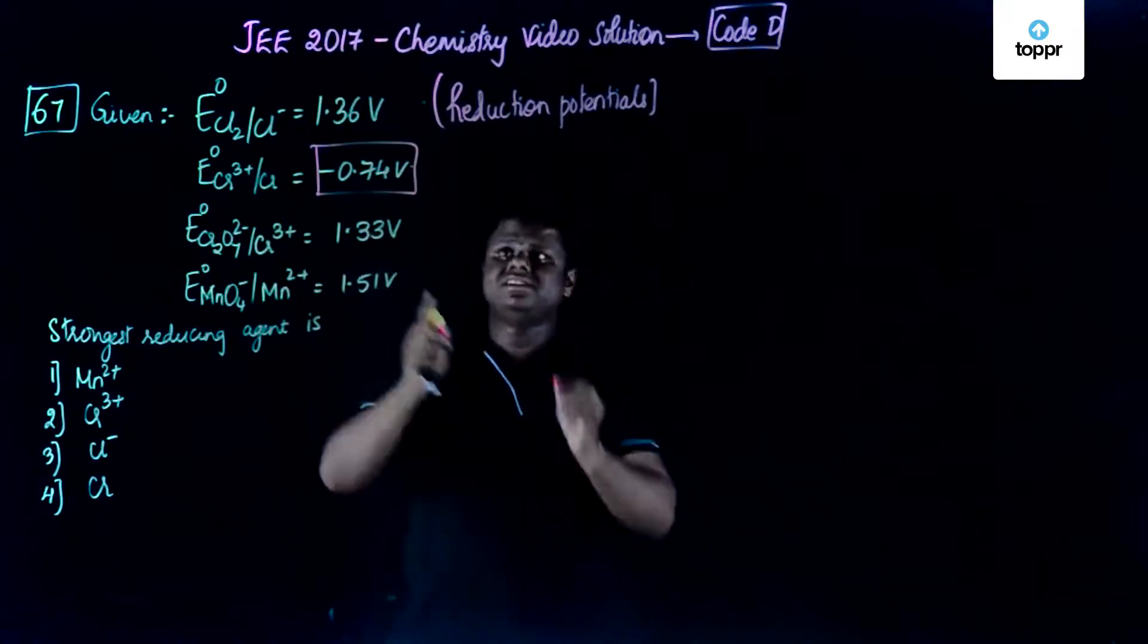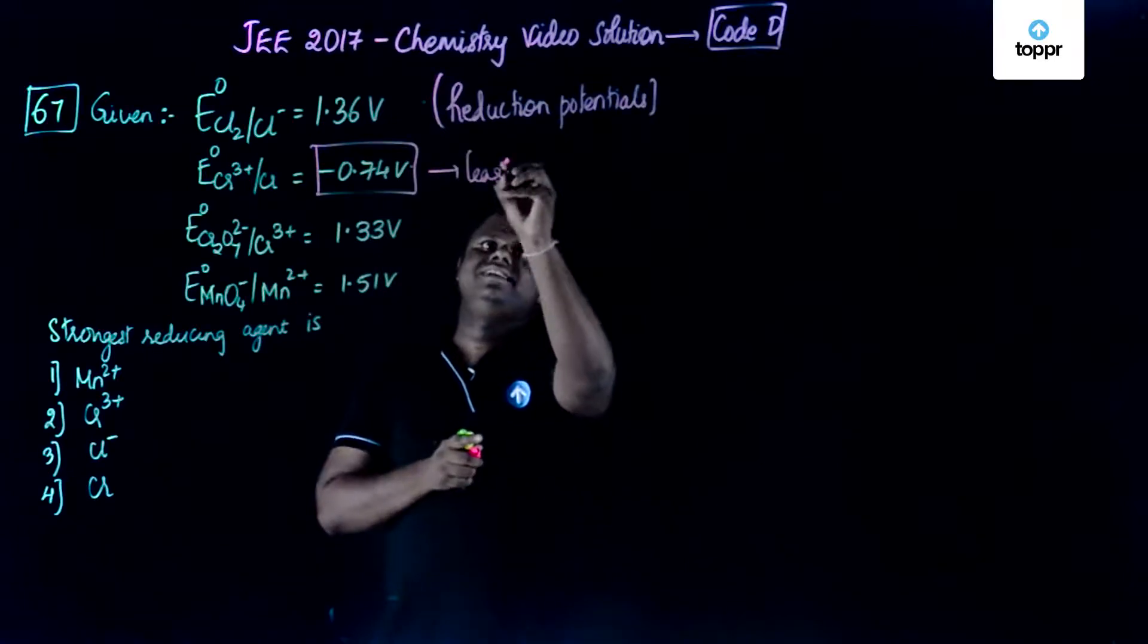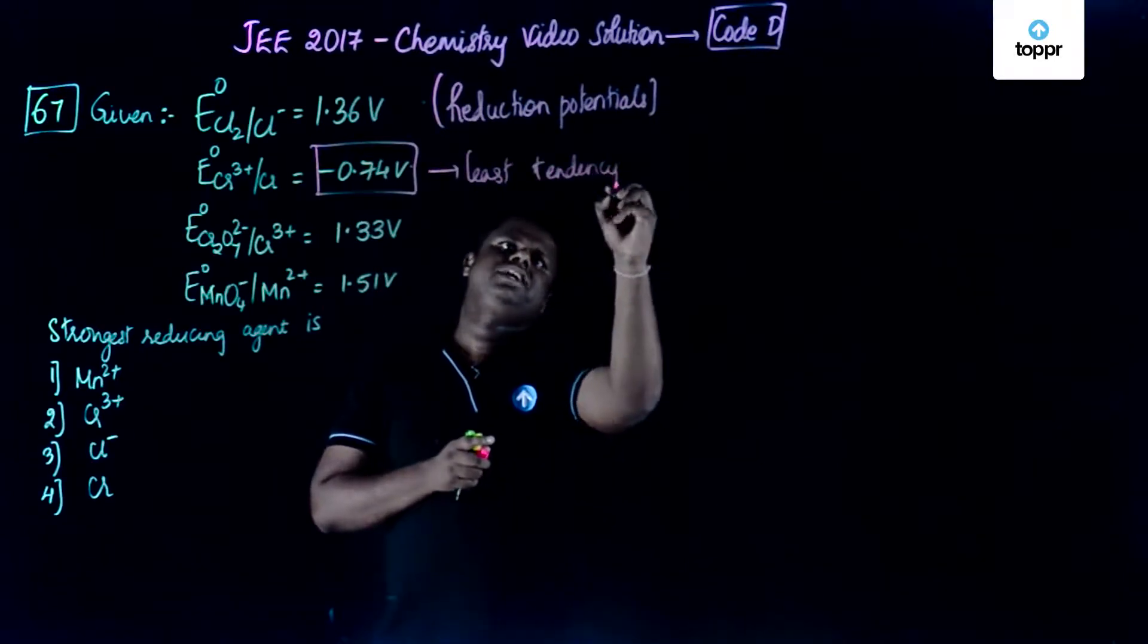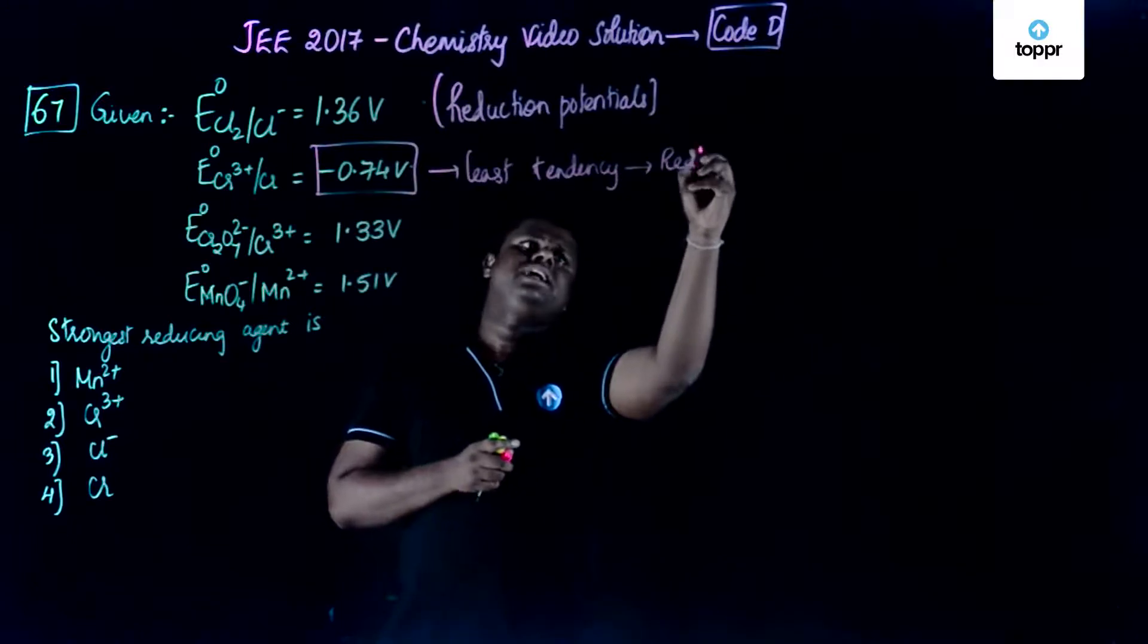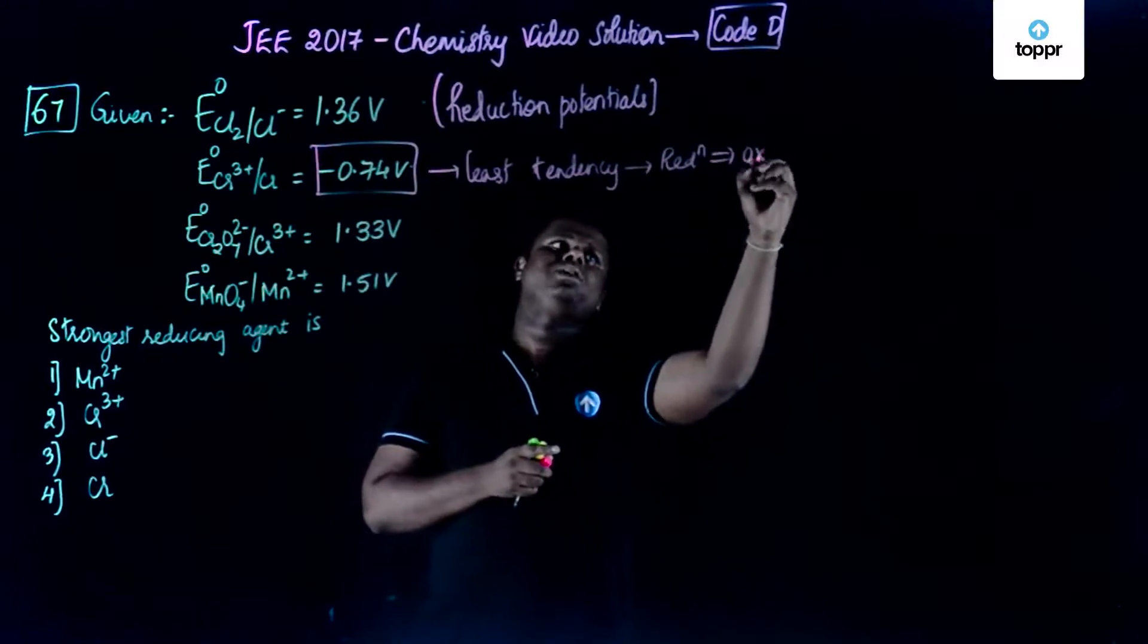So that means chromium has the least tendency to undergo reduction. That means it undergoes oxidation, correct?